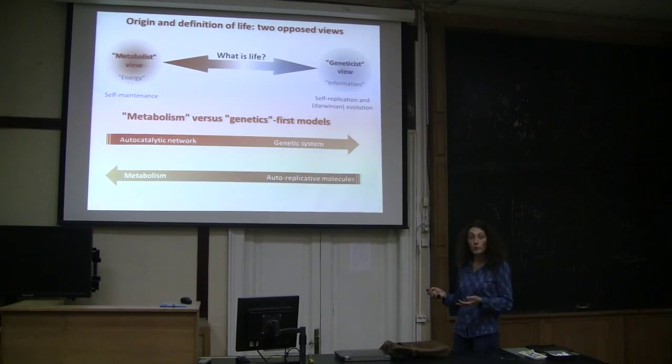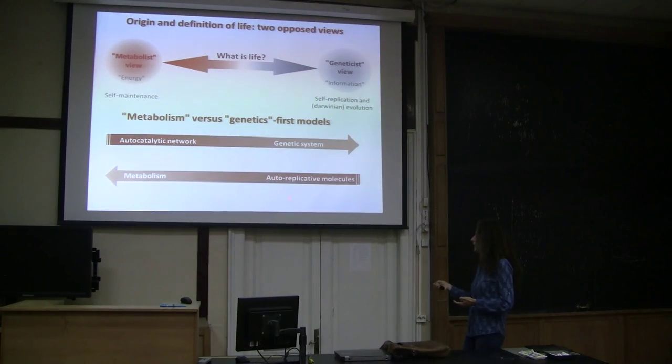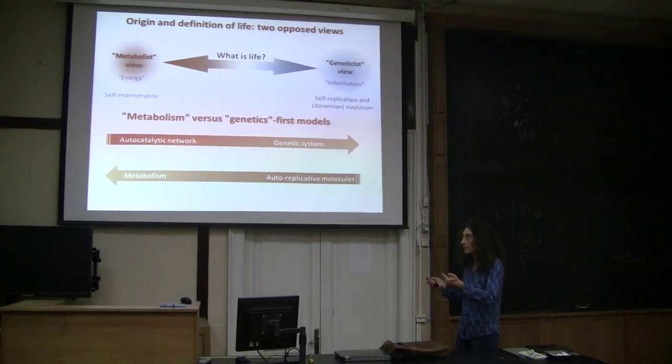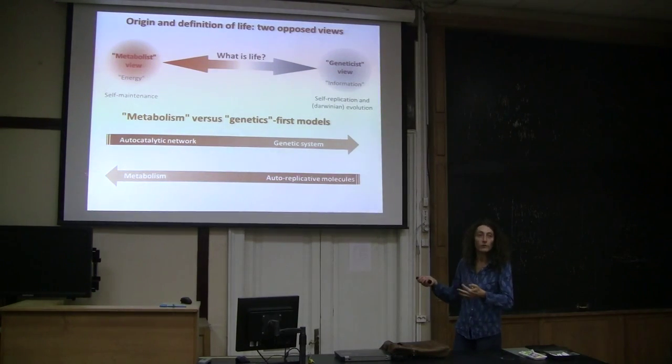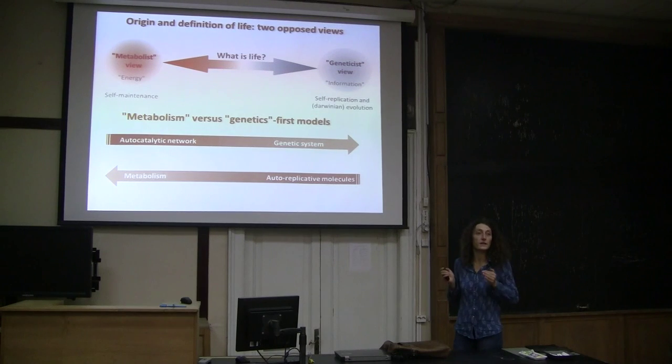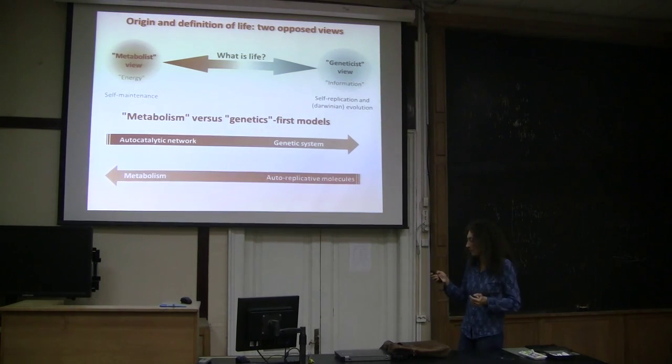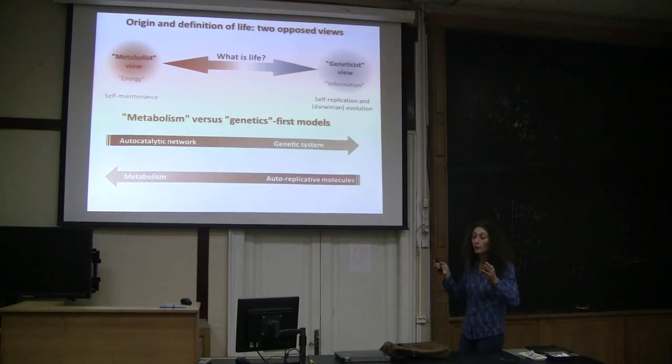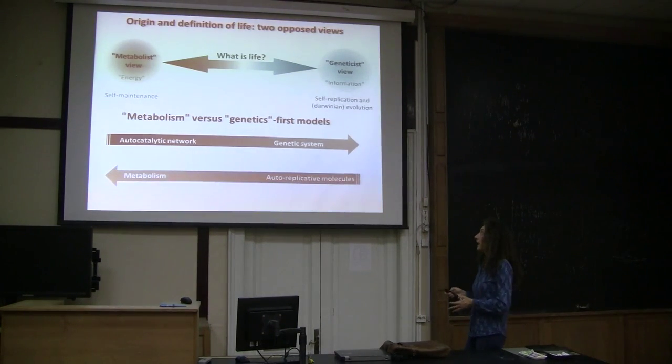And for geneticist views, we have just the opposite. We have the first thing that appears is an auto-replicative system, and much later we will find that metabolism and a full cell will come. But at the beginning, what we have is a self-replicating gene, in a sense. So these are the two kinds of models, but there are many models. And these models also differ in the type of environment where they propose that life emerged.